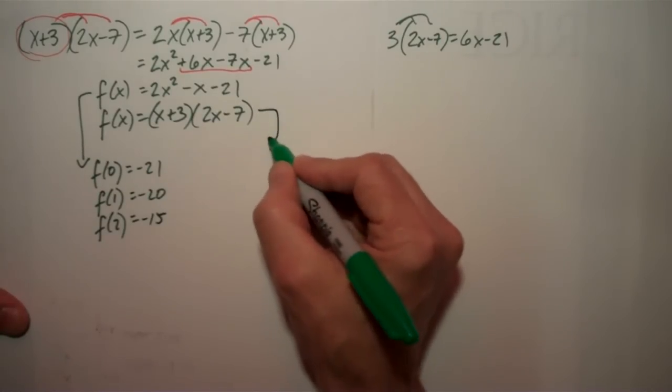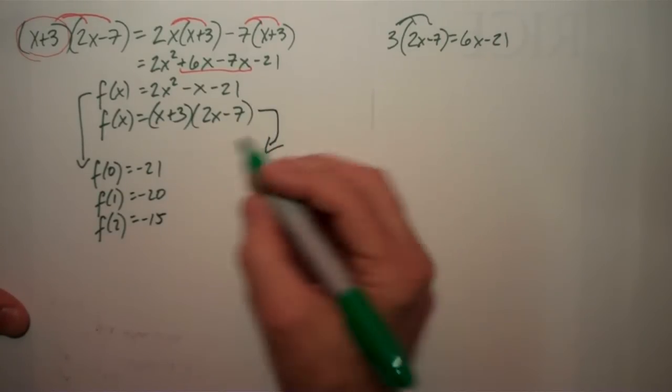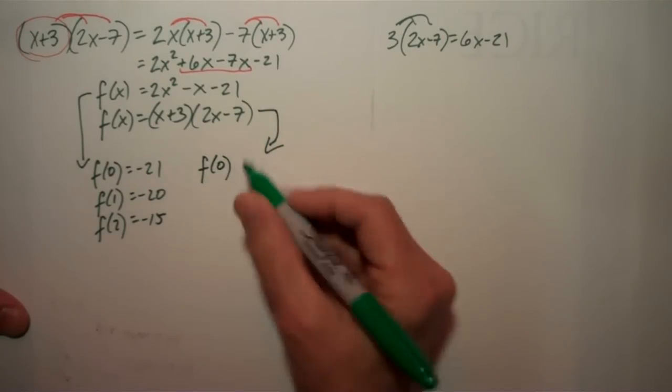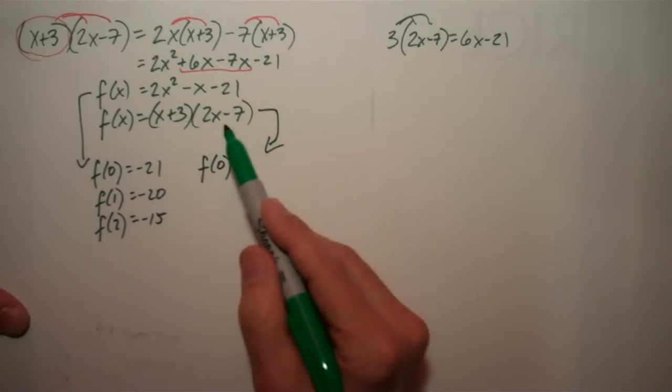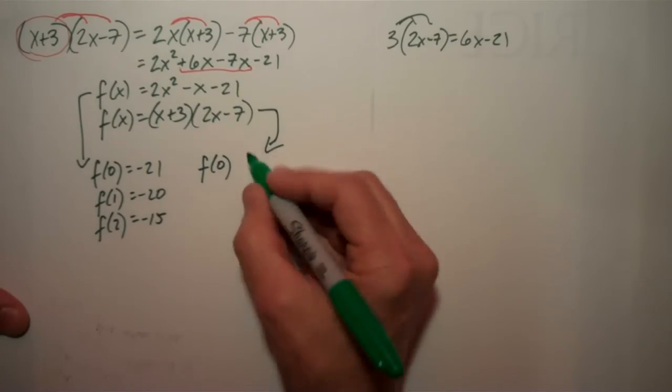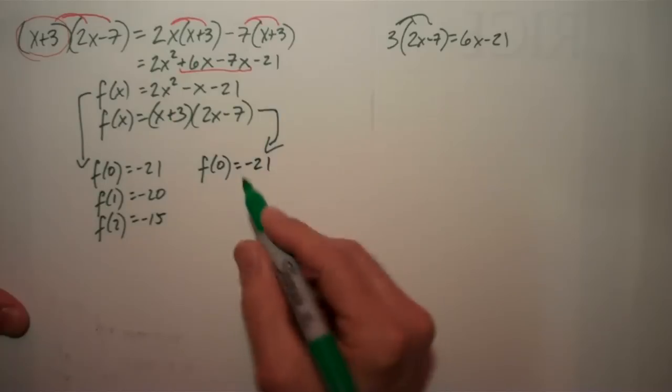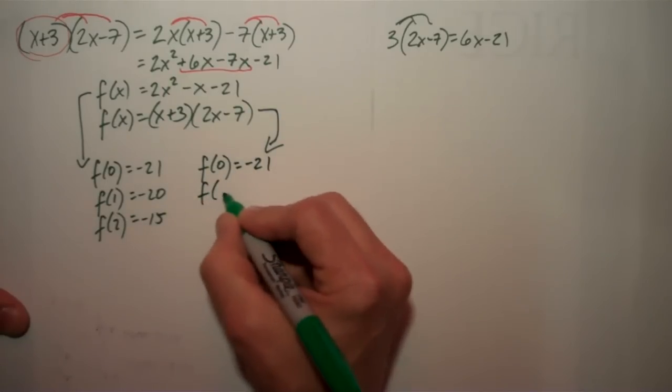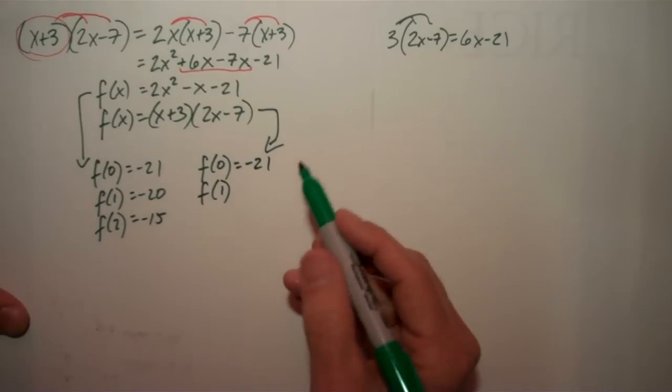Okay, now let's try it with this one. f of 0, 0 plus 3 is 3, 0 minus 7 is negative 7, 3 times negative 7 is negative 21. That matches.